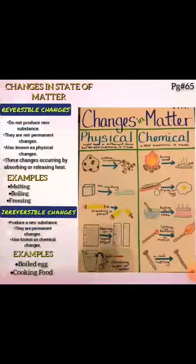Now moving to the next topic: changes in state of matter. There are two types of changes: reversible change and irreversible change. Reversible changes are those in which no new substances are produced — the chemical composition of the substance remains the same; only the size, shape, or state of matter changes.